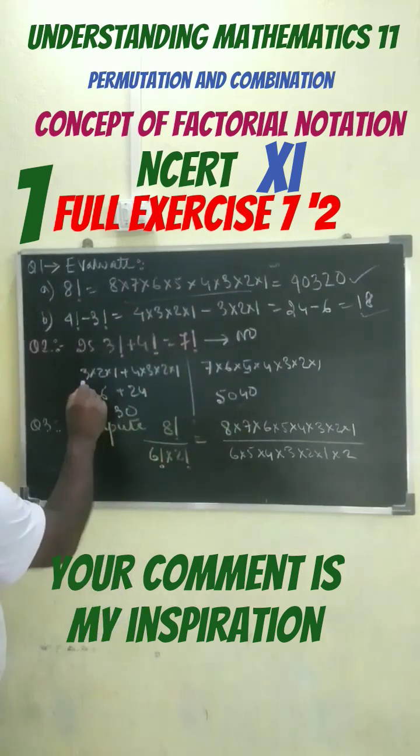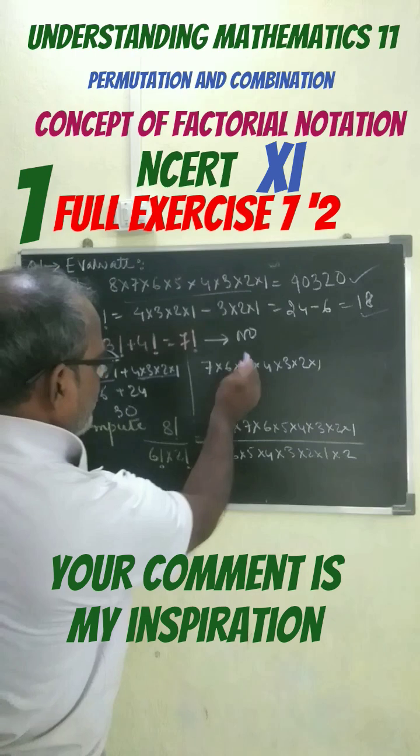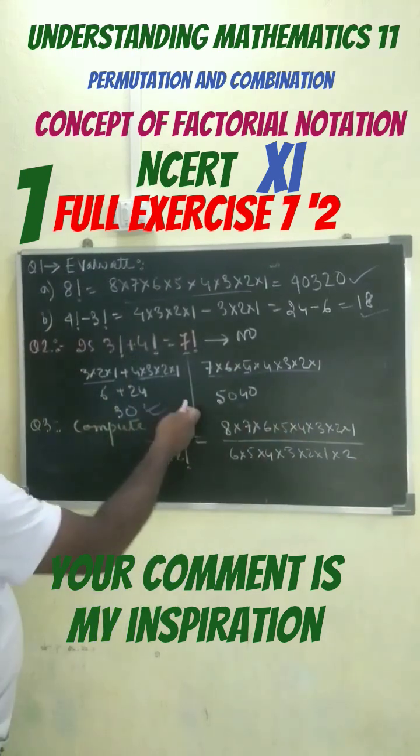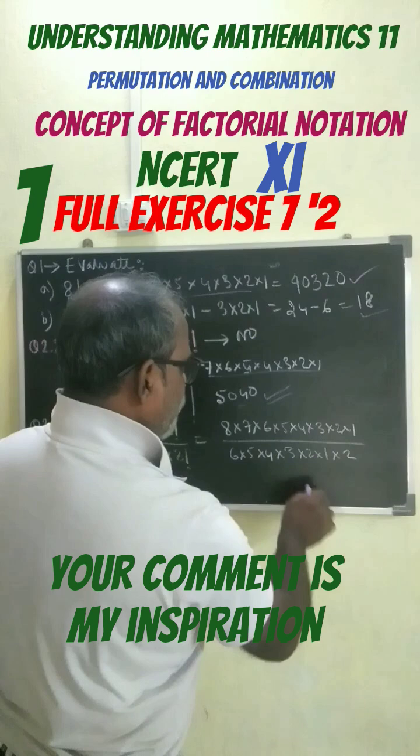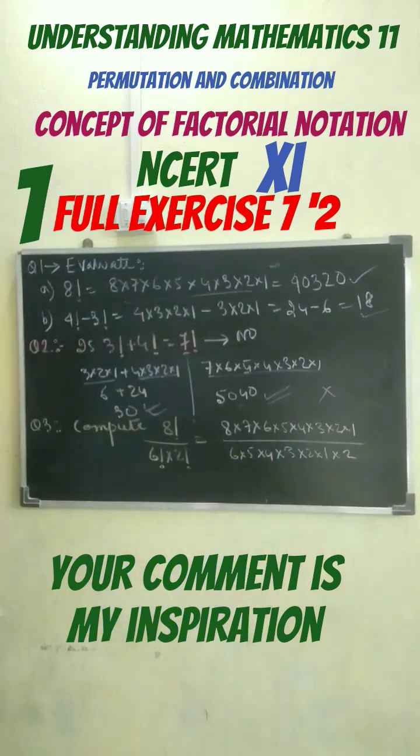Why? Because factorial 3 can be written in this format, factorial 4 in this format. The left side equals 30 and the right side equals 5040, which are not equal. Let's compute.